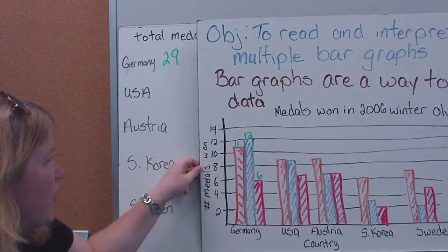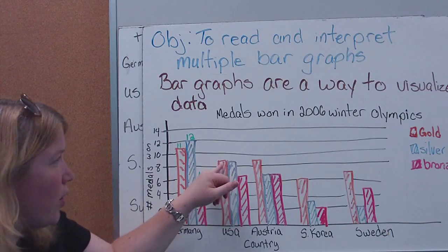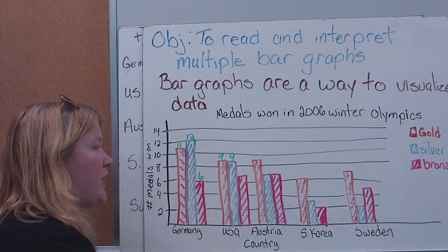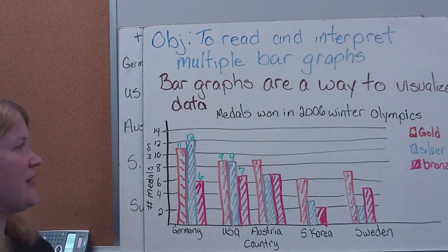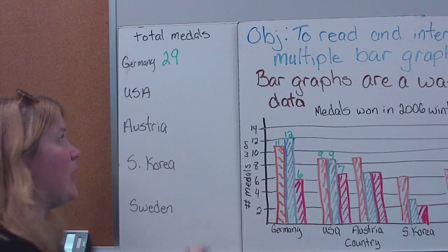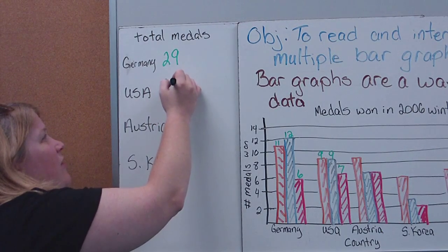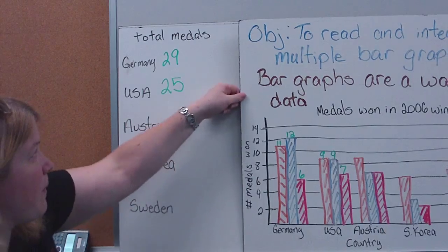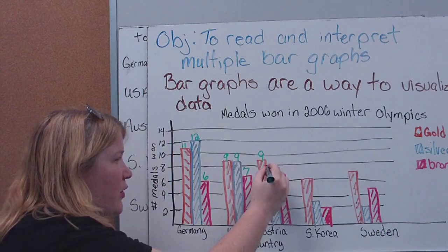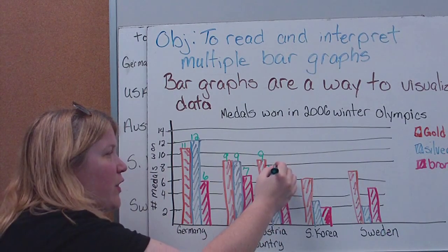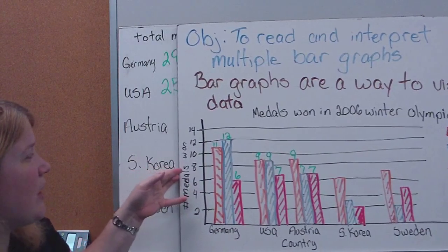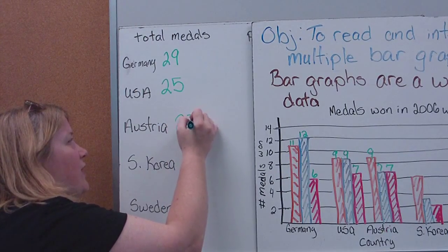How many did USA have? Gold: they had 9. Silver: they also had 9. Bronze: they had 7. So total medals for USA: 9 plus 9 is 18, plus 7 is 25 medals. Austria also had 9 gold medals, then 7 silver and 7 bronze. So altogether, 7 and 7 is 14, plus 9 is 23 medals total.